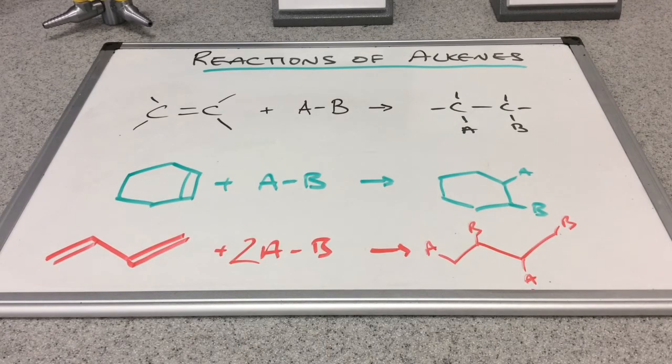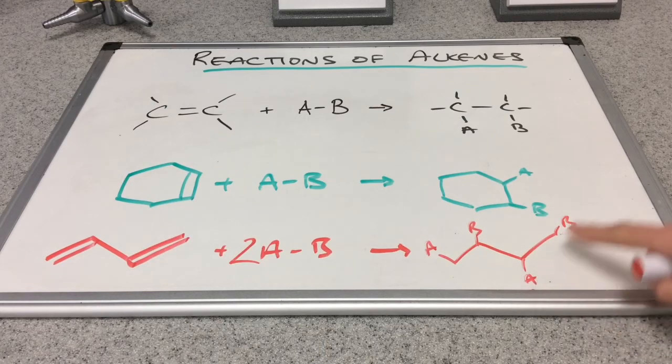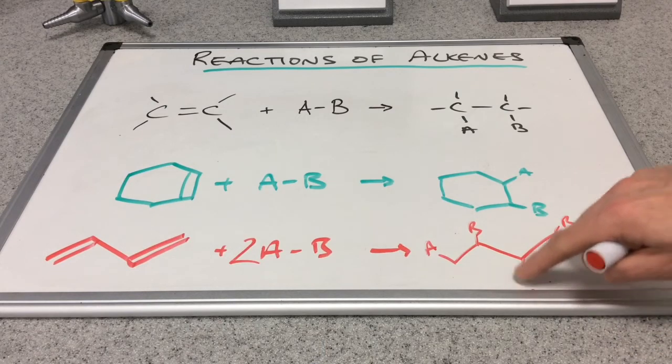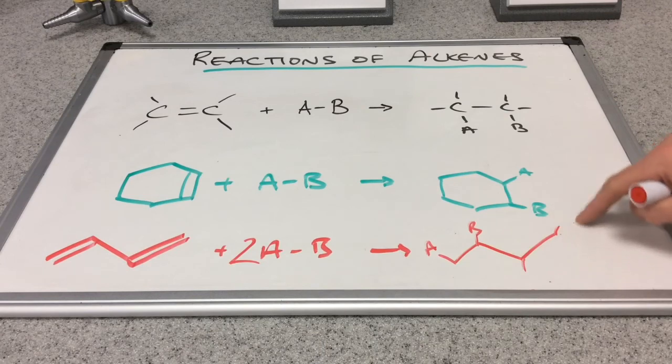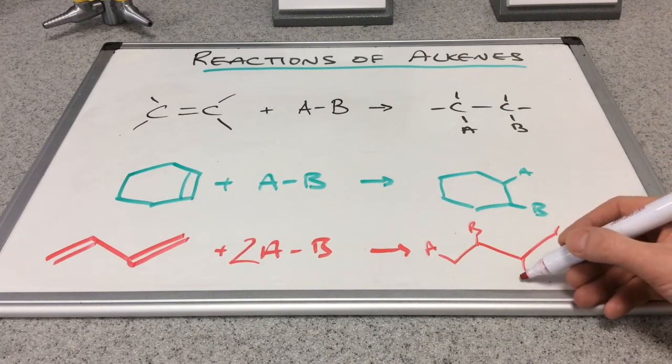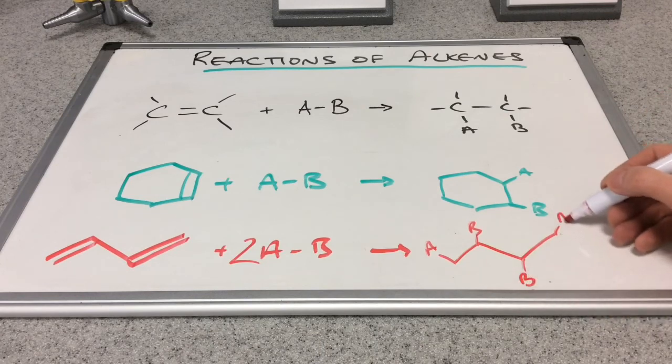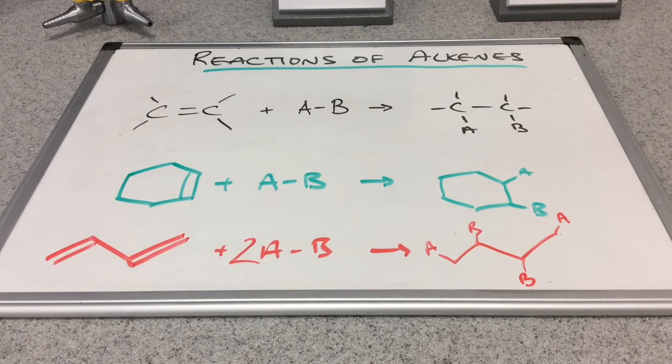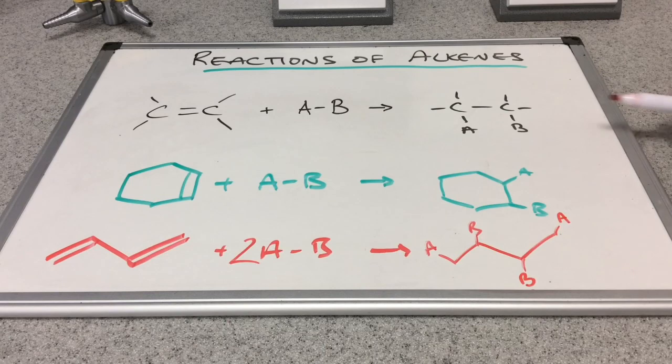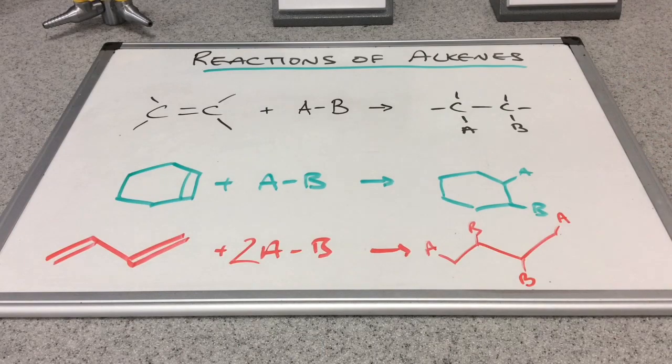This would typically be a harder type of question because this AB could actually add the other way around and give you an isomer. We'd have the Bs together—that's slightly different and makes that question more difficult. But this general reaction really does help cope with these more complicated types of questions.